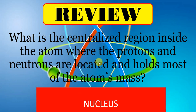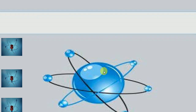Here is an example of an atomic model. The outer part is the electron, and the one in the middle is known as the nucleus. I'll stop here — please proceed to the next video for the activity.